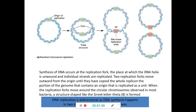Let me first recall the bacterial chromosome replication — the theta model. DNA replication normally happens from a site called the origin of replication, and synthesis mainly occurs at the replication fork, where the DNA helix is unwound and the individual strands are replicated. Two replication forks move outward from the origin until they have copied the whole replicon.